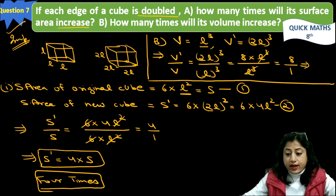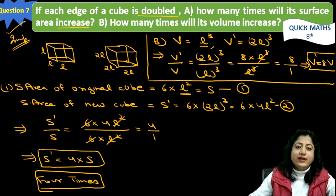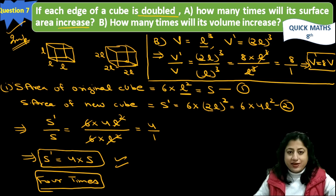So we can say that new volume becomes 8 times the original volume. So the answer is volume will be increased by 8 times, so 8 times will be increased in volume and 4 times will be increased in surface area.